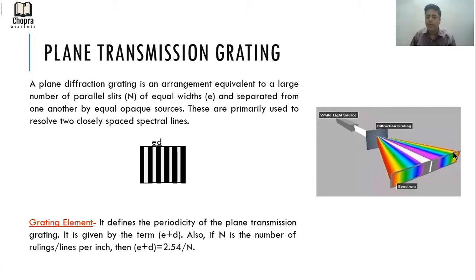When we talk about plane transmission grating, we must understand what is called grating element. Grating element defines the periodicity of the plane transmission grating. It is given by the term E plus D. E and D both are length units, so E plus D is length, or you can call it as an Angstrom or millimeter.